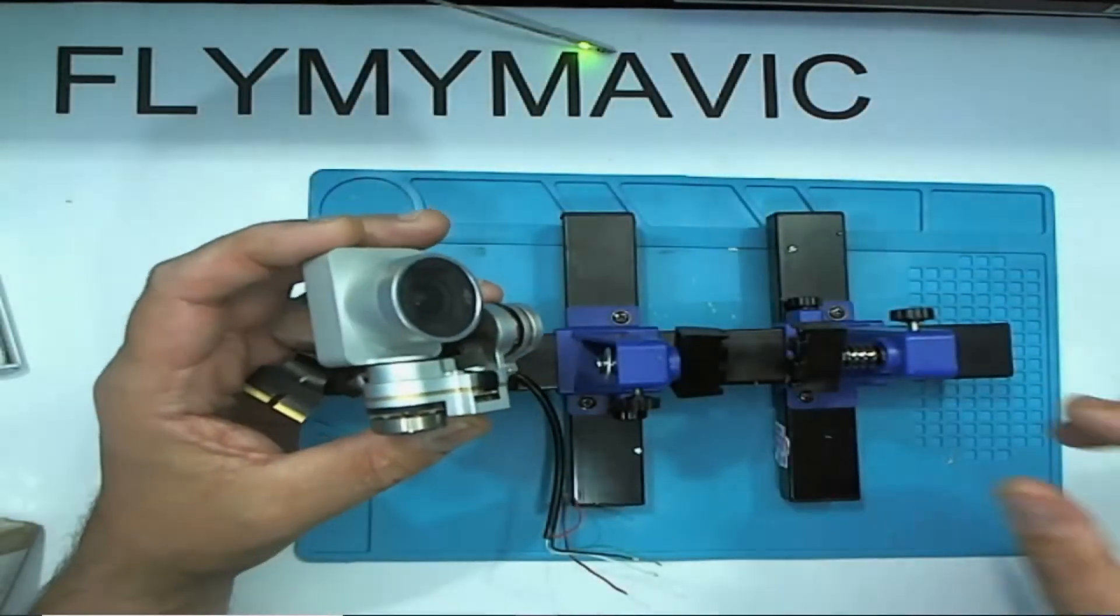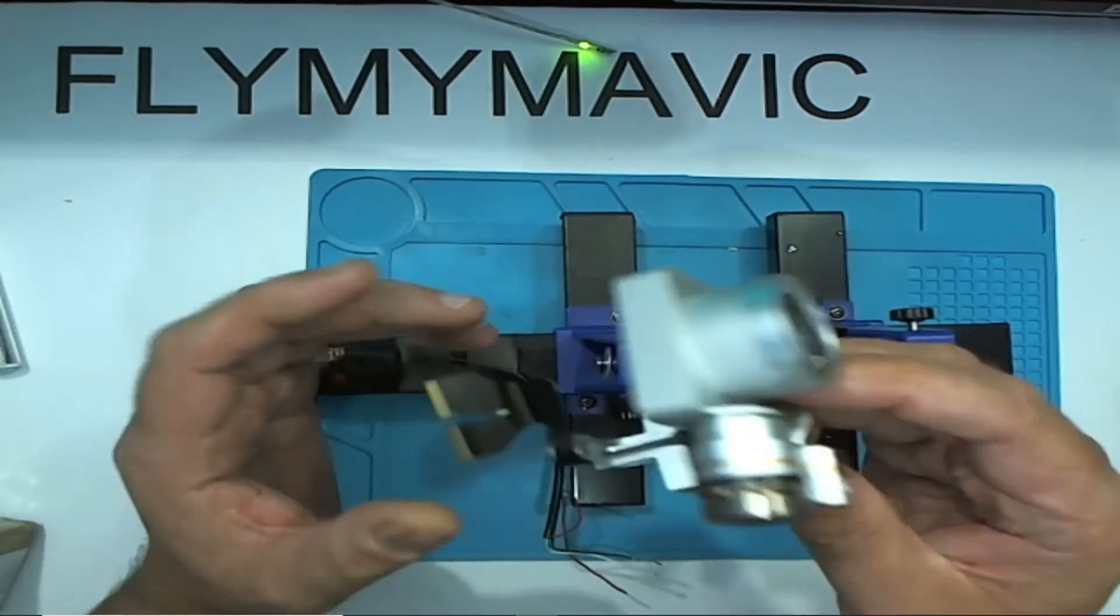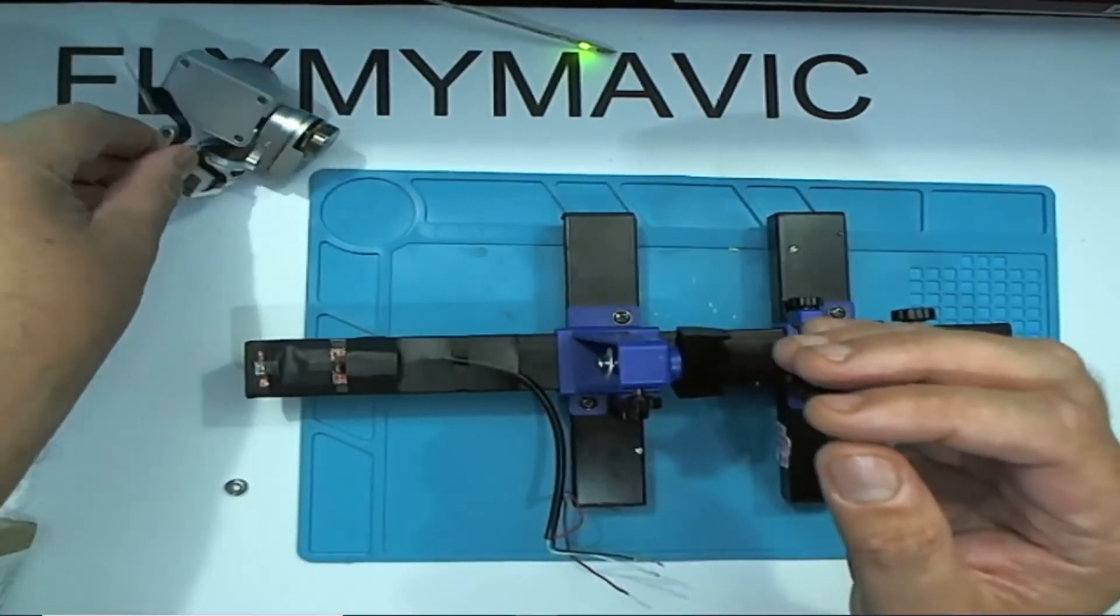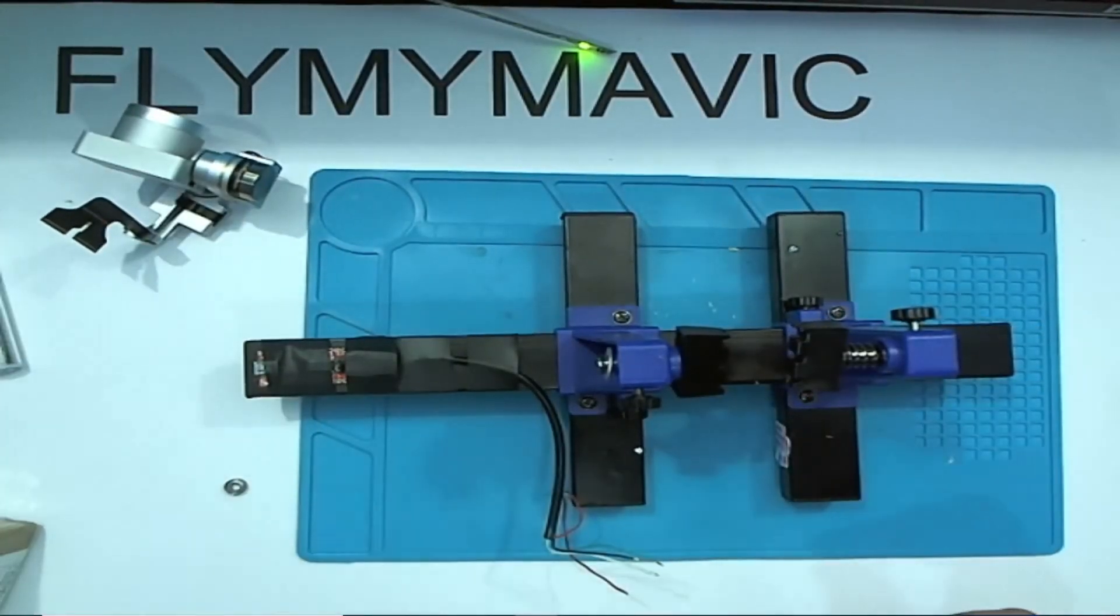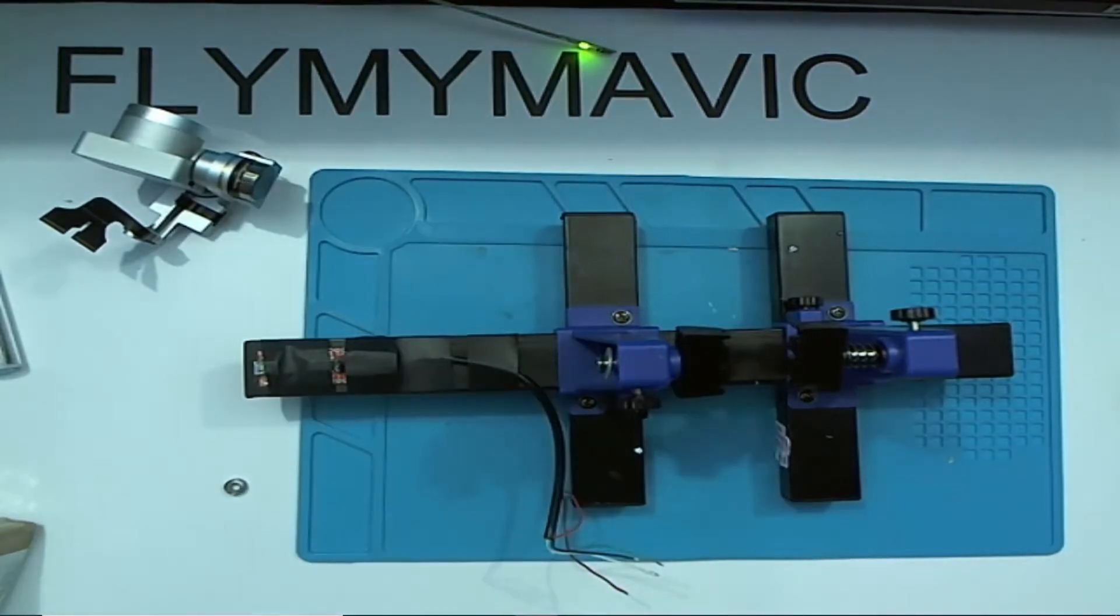Thank you for joining me, this is Fly My Mavic. This is the Phantom 3 Pro camera and this video is going to be about repairing the black screen of death that occurs on this particular camera. As you know, I have done a video on the Phantom 2 Vision Plus and one on the Phantom 2 Vision.